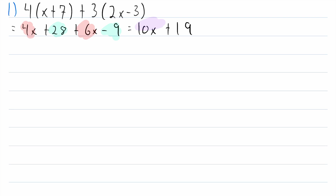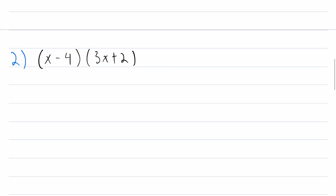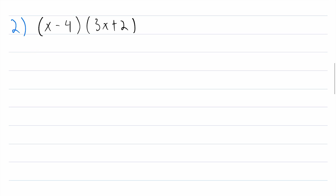And there we go — that is our final answer. This somewhat messy expression is equal to 10x plus 19. Just a little bit of distributive property and then adding like terms. Let's head on to the next example.